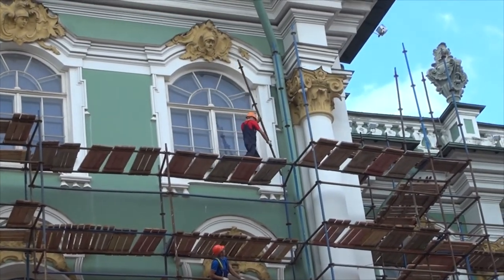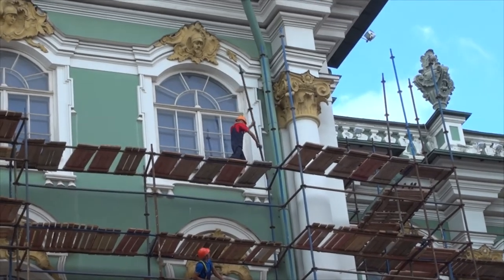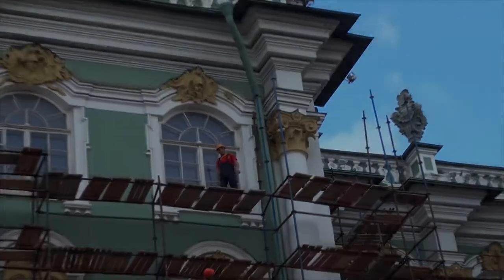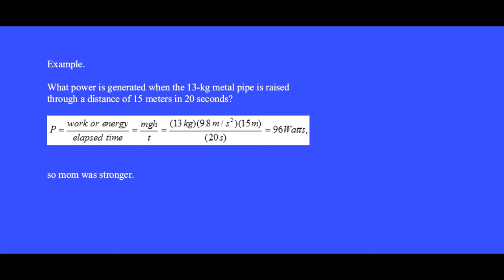We estimate that the combined height is 15 meters. What power is generated? The power is work or energy divided by elapsed time. This time the work is MGH equals 13 kilograms times 9.8 meters per second squared times 15 meters divided by 20 seconds, equals 96 watts. So mom was stronger.